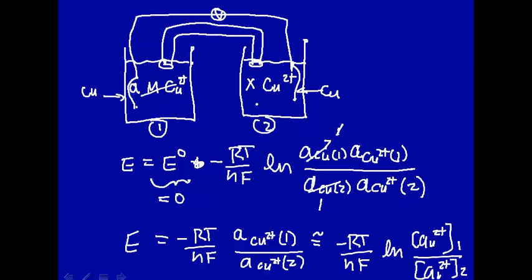This is called a concentration cell. If you know the concentration of copper in one side, make various approximations to activity coefficients and so on, you can, by measuring cell voltage, calculate the concentration of copper on the other side.